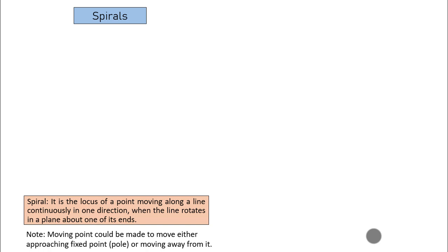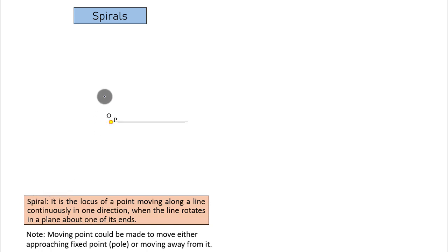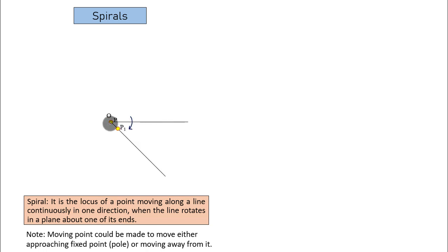So without further ado, let's kick off with spirals. Before we go ahead and read the definition, let me first give you a demonstration — it will be very easy to understand. This point O is the pole, which is going to remain fixed, and there is a point P which is going to slide along this link. Now let's say this link takes a rotation in the clockwise sense by an angle of 45 degrees.